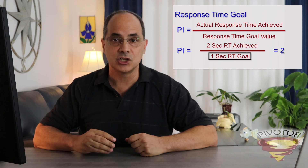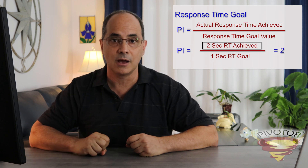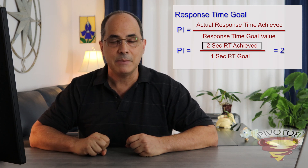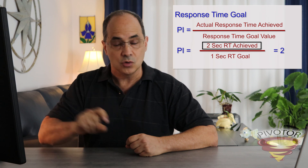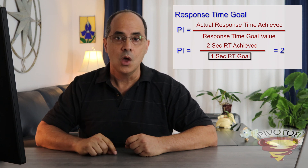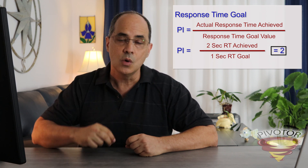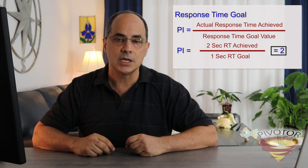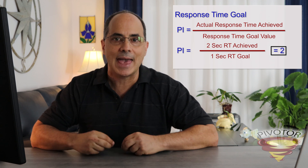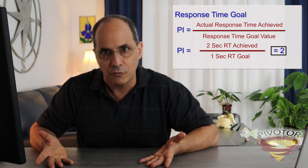If we have a one second goal and we actually achieved a two second response time, then the PI is 2 divided by 1, which means the PI is 2 — we did twice as bad as the goal value. That is how PI is calculated for response times.